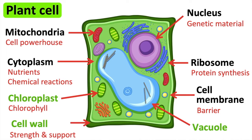The cell wall surrounds the cell membrane. It strengthens the cell and provides support for the plant.